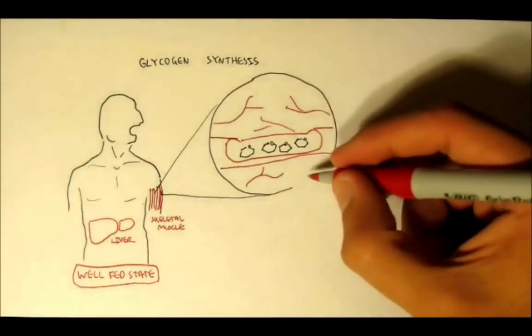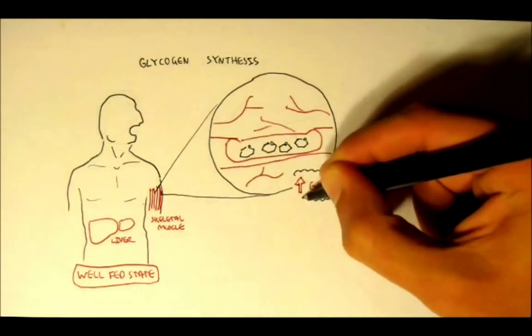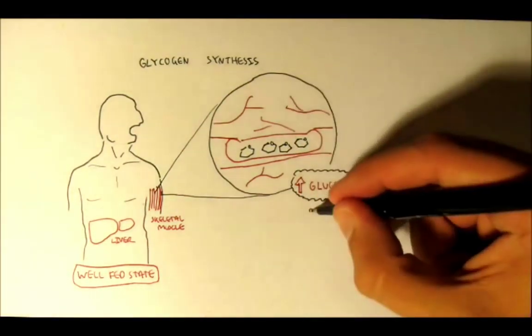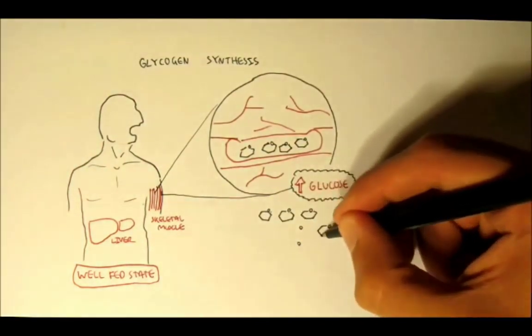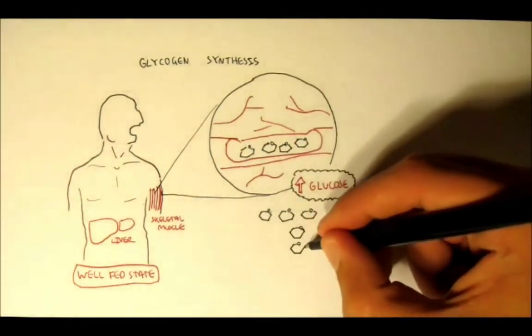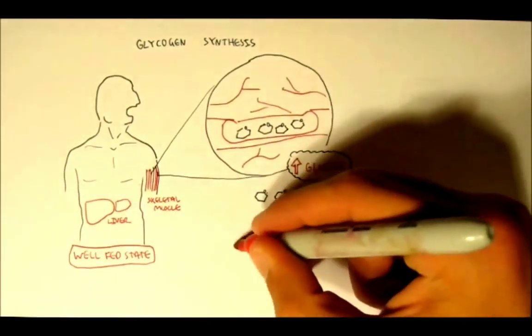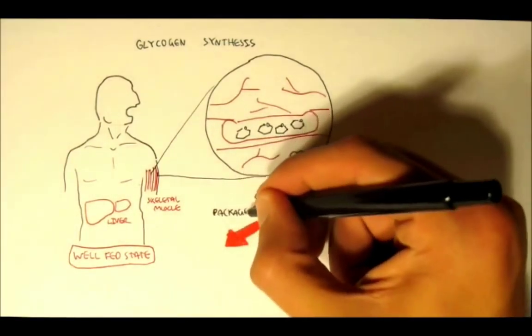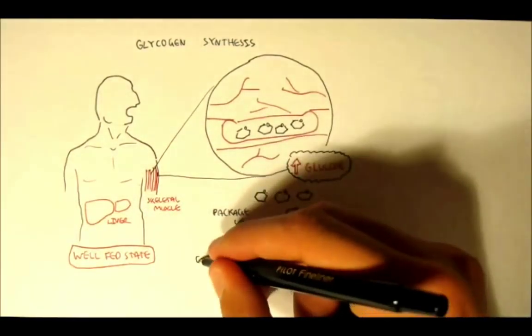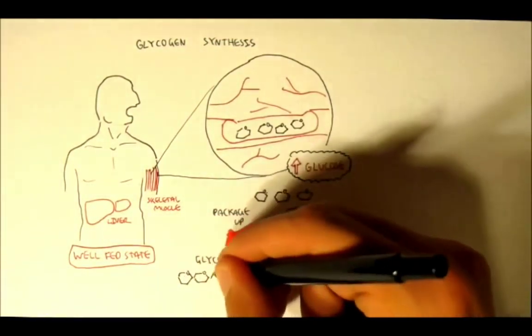Now when there is high blood glucose levels in the body, the body will package up these glucose molecules. They will package it up to form glucose polymers known as glycogen so that it can be stored easily. So these glucose molecules will be packaged up to form glycogen, and this glycogen can be stored in skeletal muscle or the liver for use.